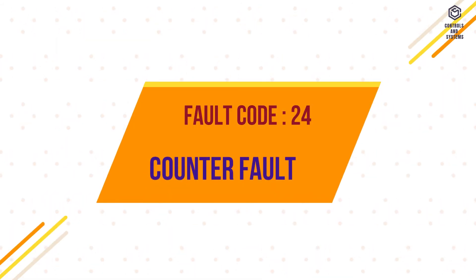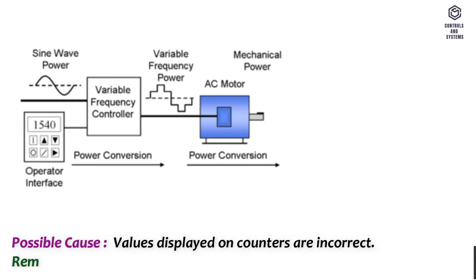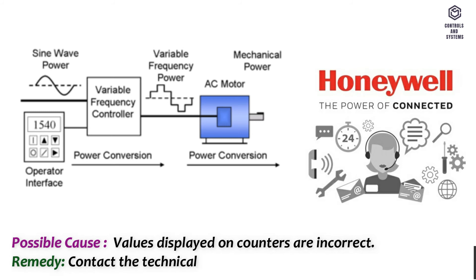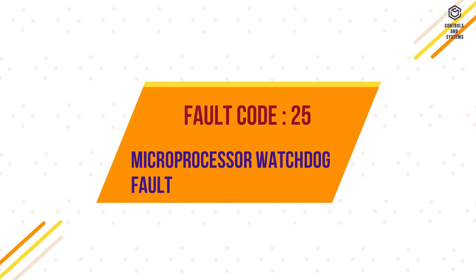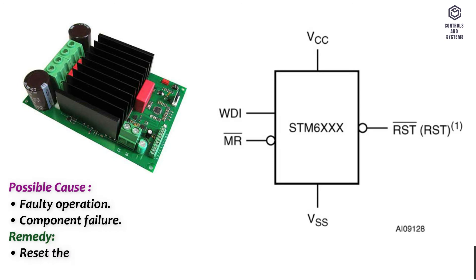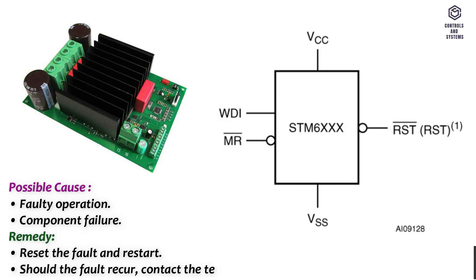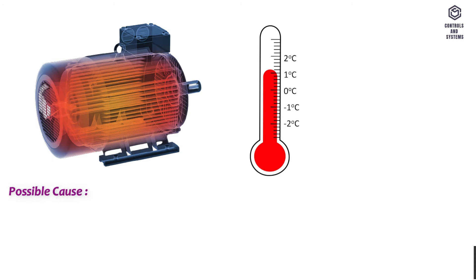Fault code 24 – Counter fault. Possible cause: values displayed on counters are incorrect. Remedy: contact technical support. Fault code 25 – Microprocessor watchdog fault. Possible cause: faulty operation or component failure. Remedy: reset the fault and restart; should the fault recur, contact technical support.